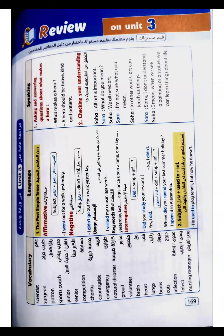In Unit 3, we took the Past Simple tense. The Past Simple is formed from the subject and the second form of the verb. In English, verbs are divided into two types: regular verbs, which form their second form by adding -ed or -d or -ied, and irregular verbs, which must be memorized to know their second form.